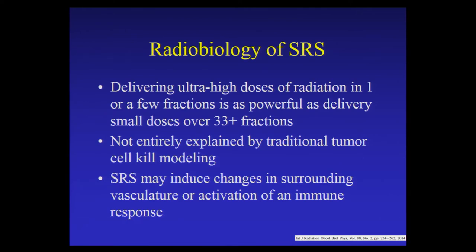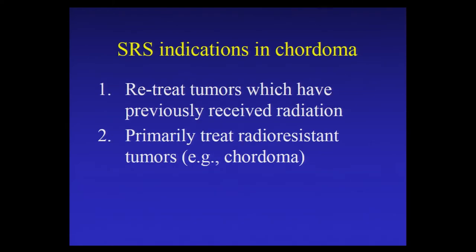Delivering ultra-high doses of radiation in one or a few fractions is as powerful as delivering small doses over 33-plus fractions. Our current radiobiologic modeling doesn't completely explain this. The idea is that stereotactic radiosurgery delivering ultra-high doses in one or a few fractions may induce changes beyond DNA damage — including changes in the surrounding vasculature, affecting blood supply — and there may also be an activation of an immune response in response to stereotactic radiation delivery.